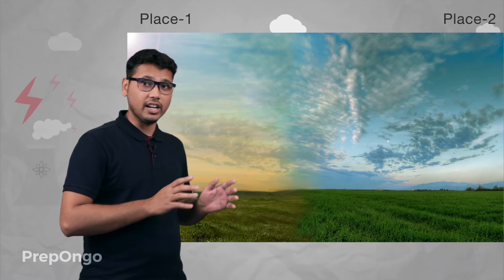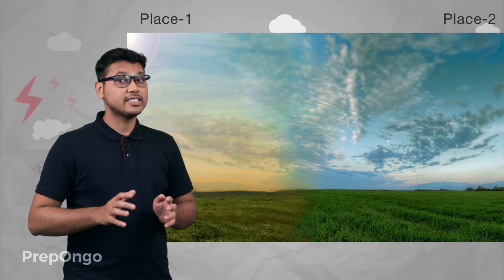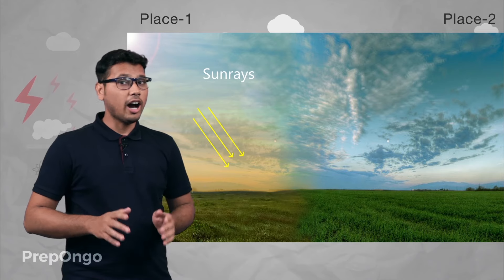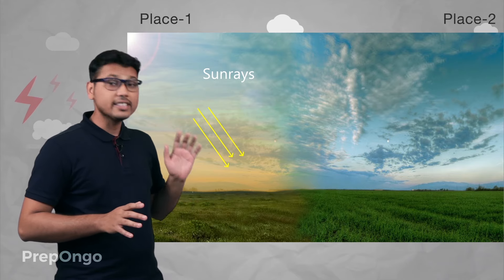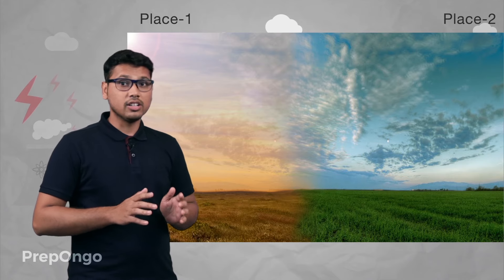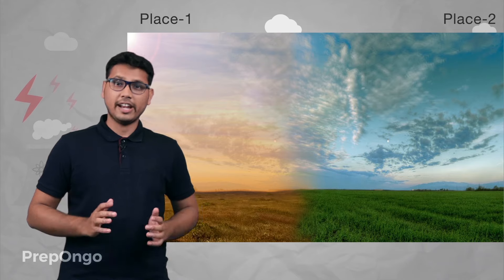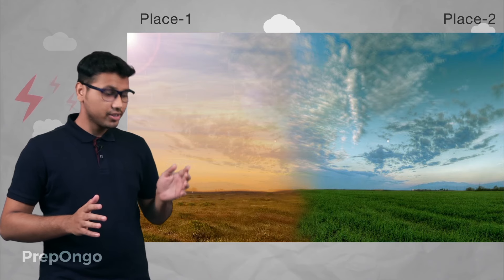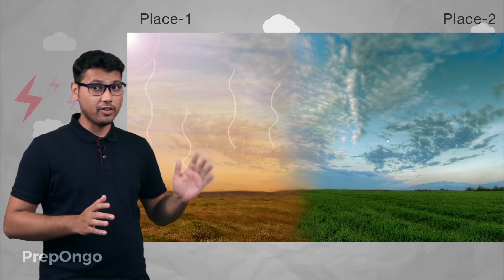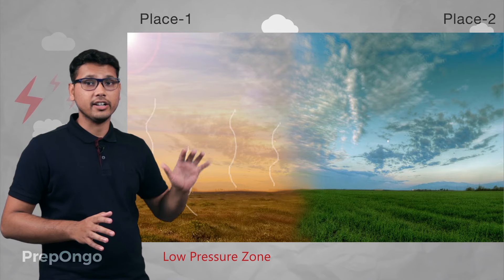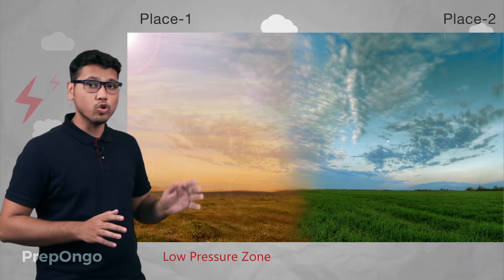To find out, let's consider two areas. Let's assume that sun rays are falling only on area 1 and not on area 2. After some time, area 1 will get heated up. As this area gets heated up, the air around it will get warm, and as the air becomes warm, warm air rises up in the sky. So the air around area 1 will start rising upwards.